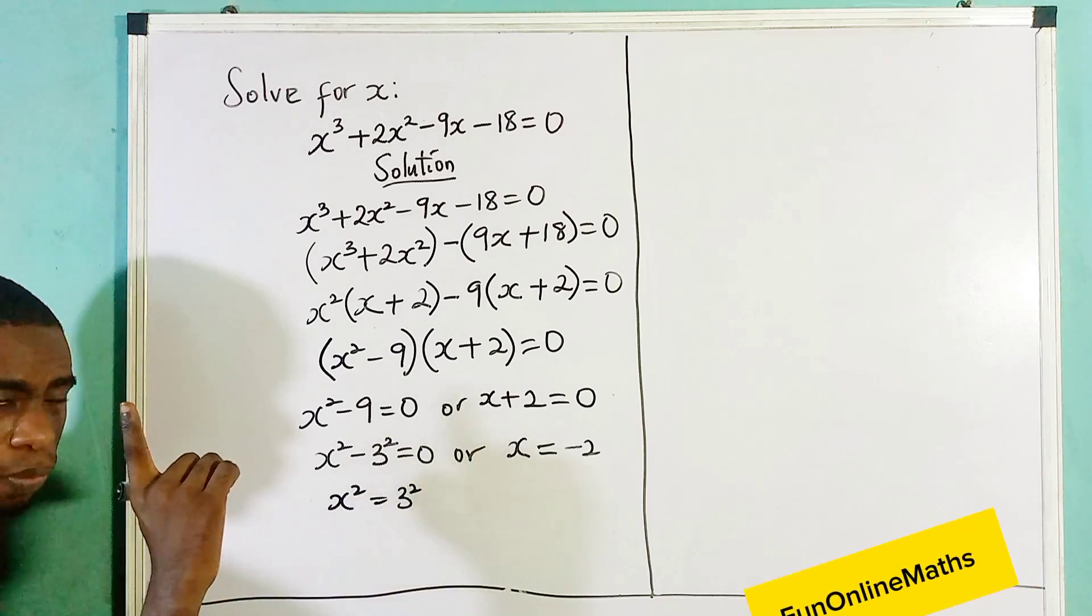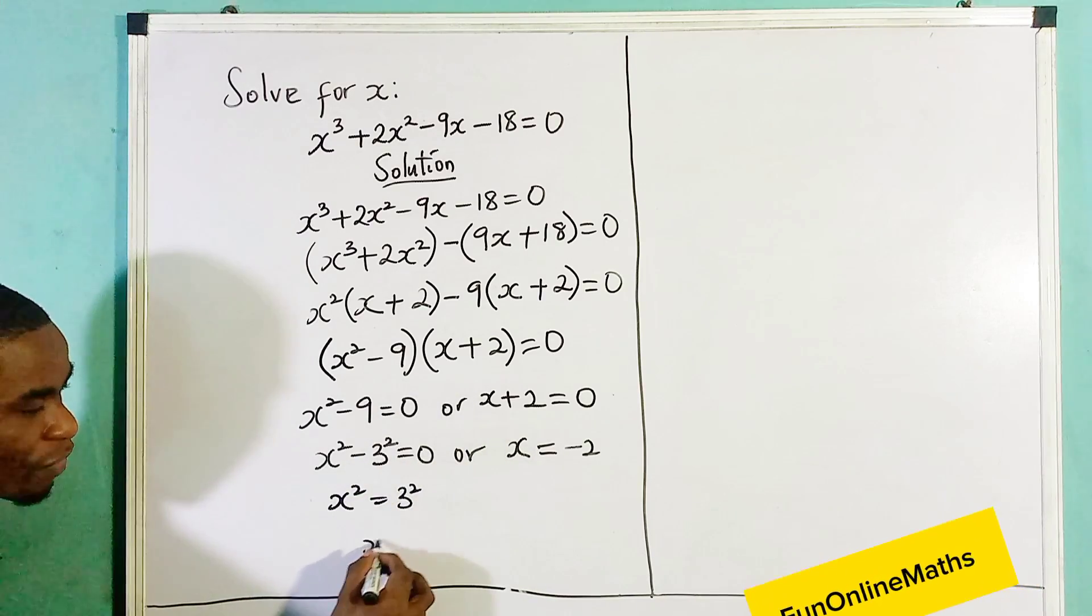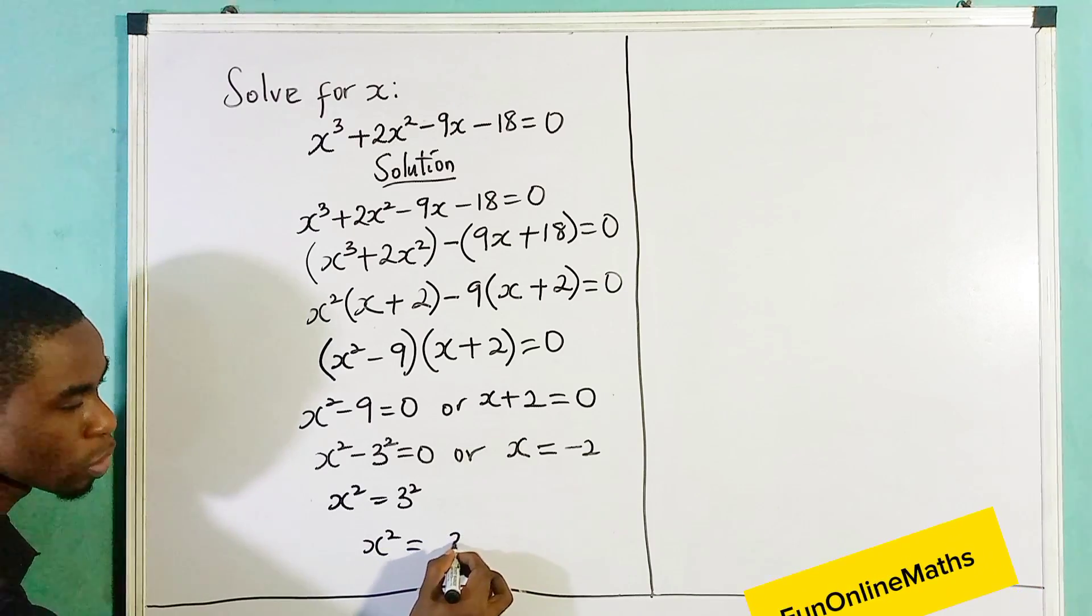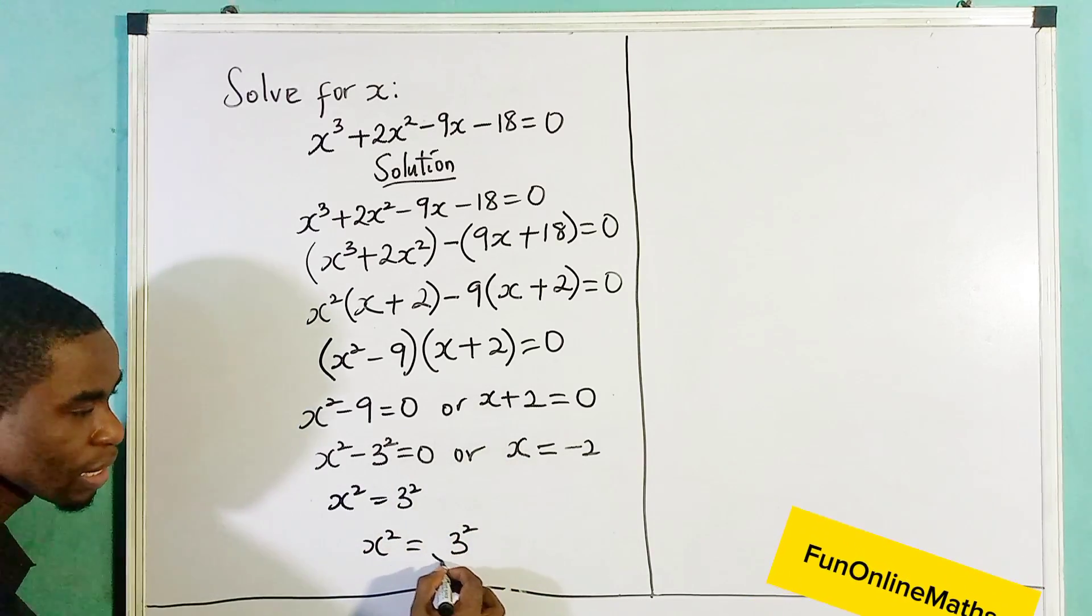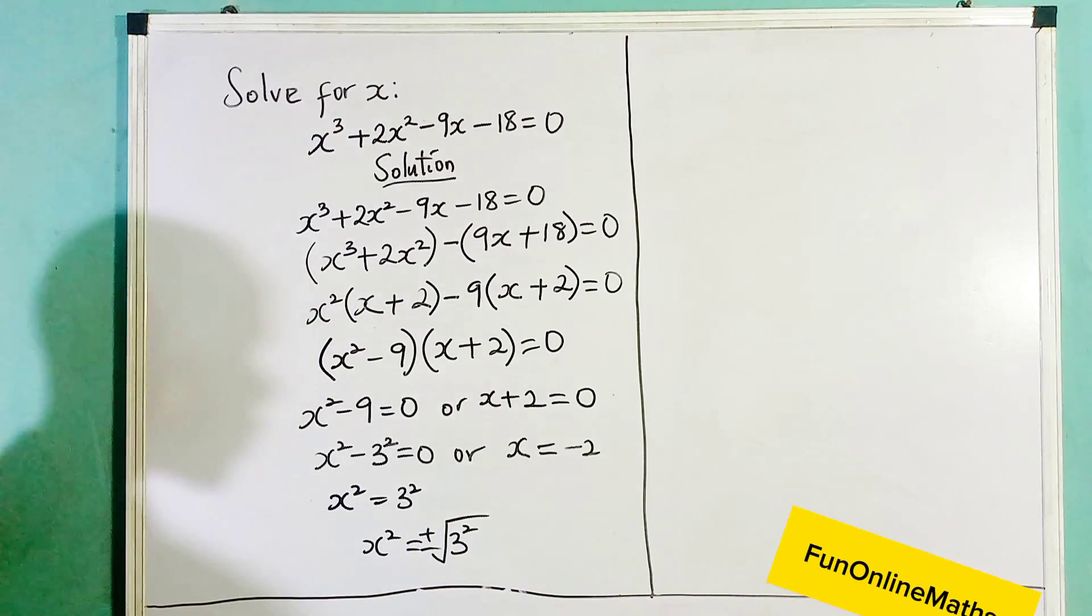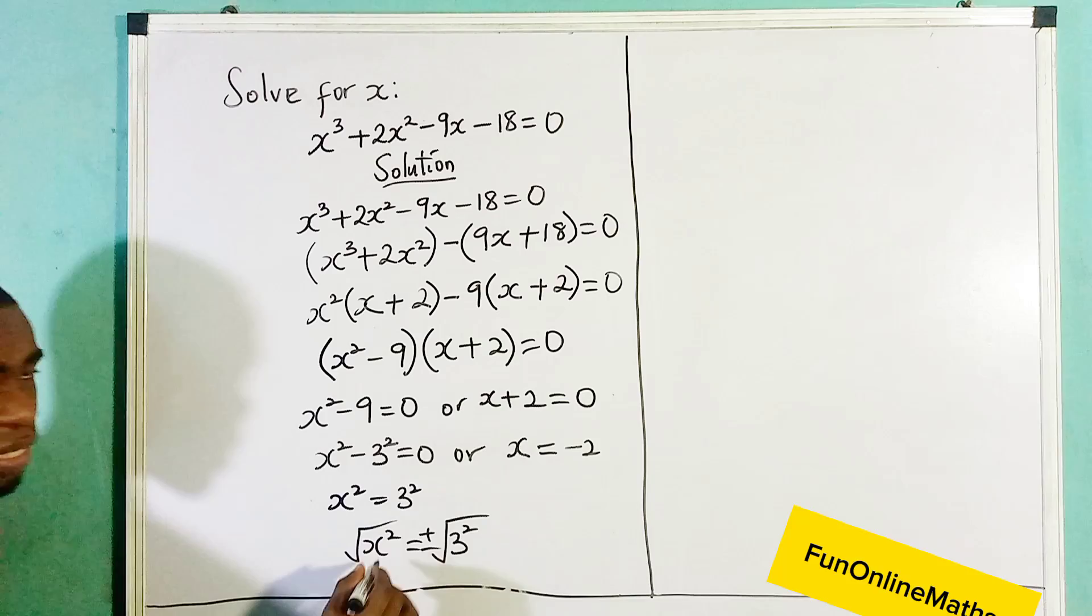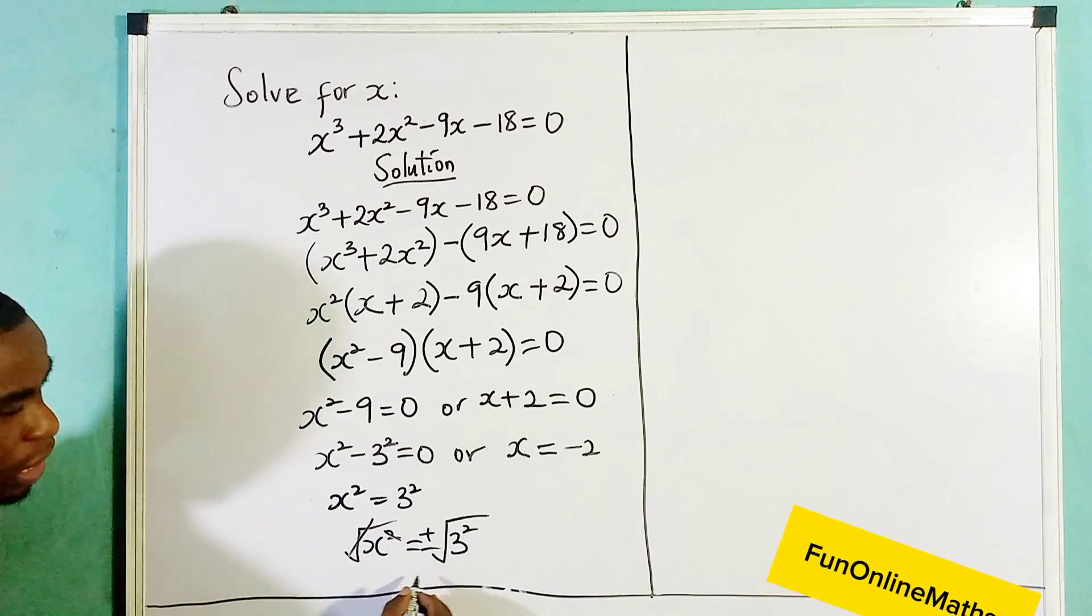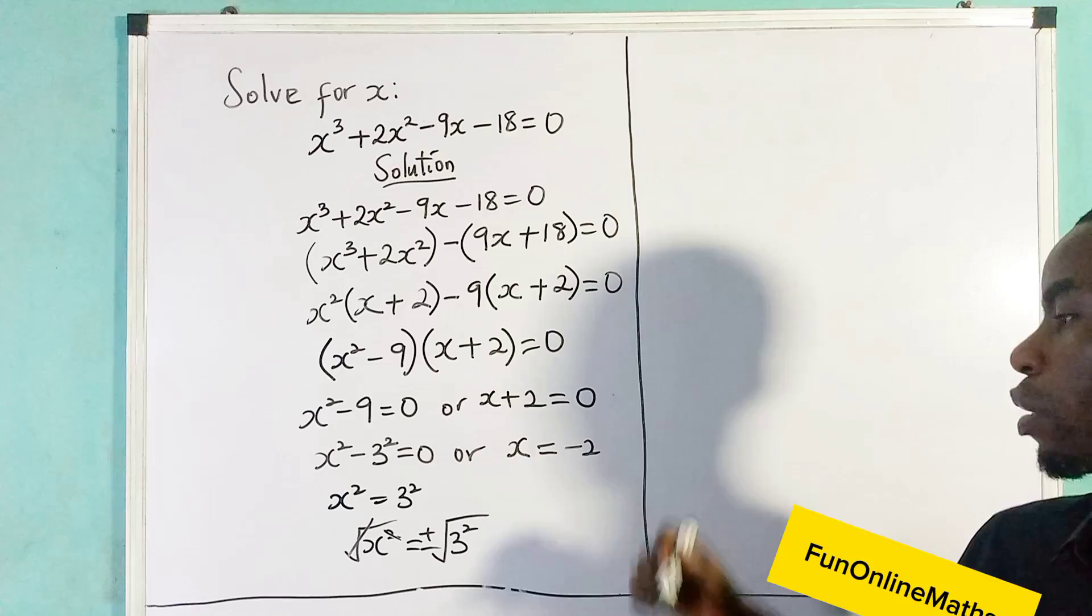Now take note, when we are taking the square roots, we have x² equals to 3². When we are taking the square root of both sides, this is going to be positive or negative, plus or minus. And then we also take the square root of this side. This cancels this. So x would either be equal to a positive 3, where we don't need to write a plus.